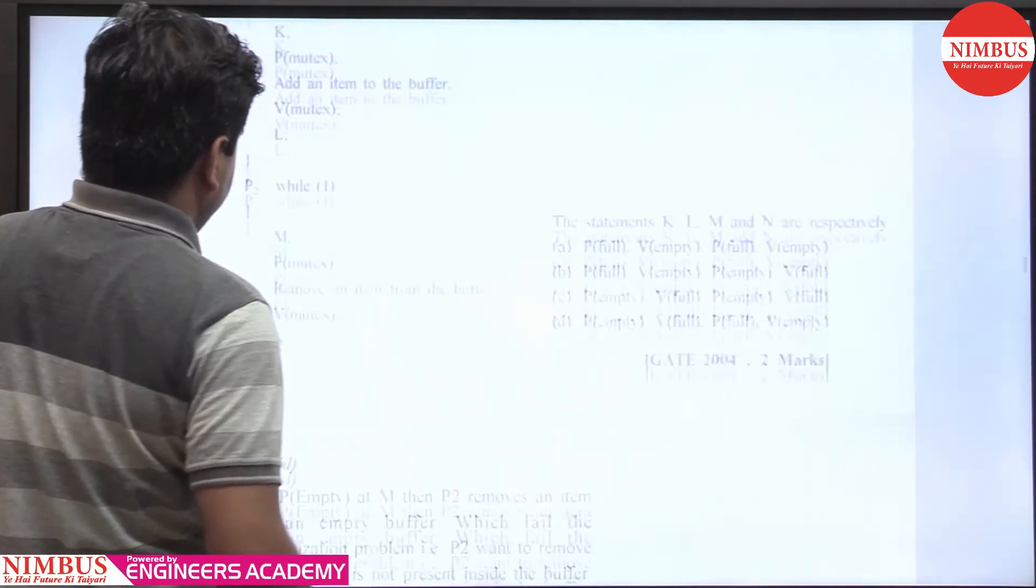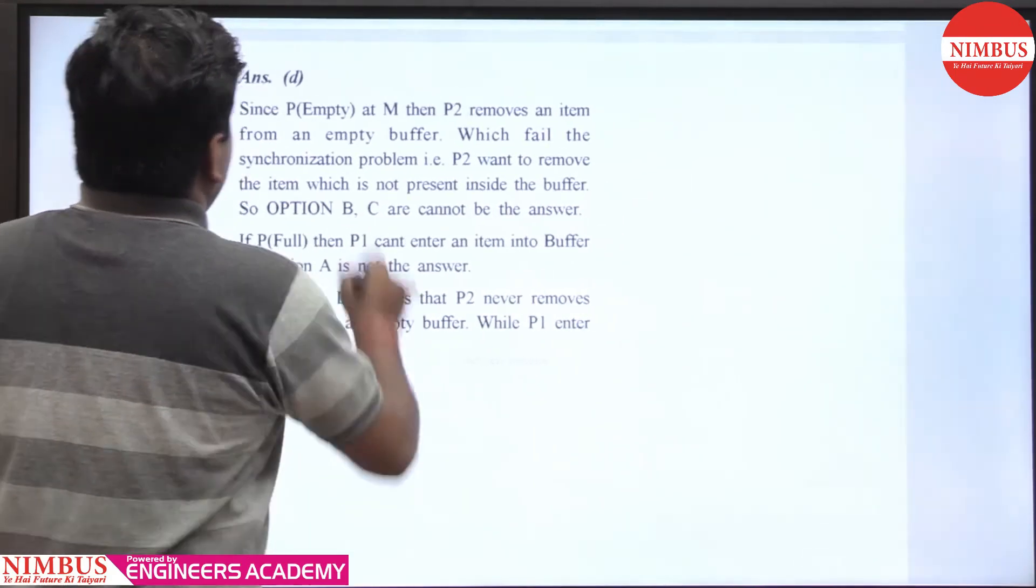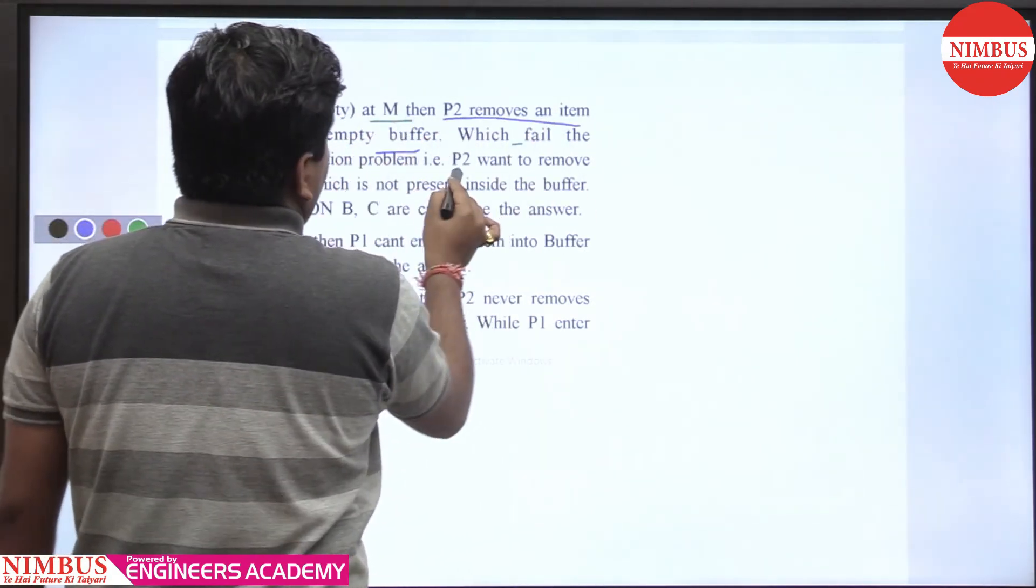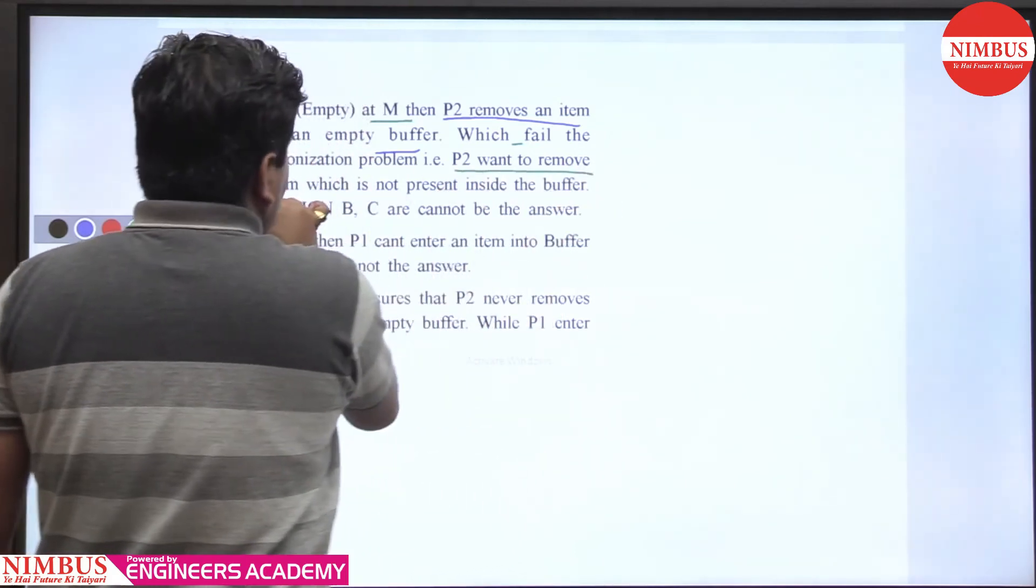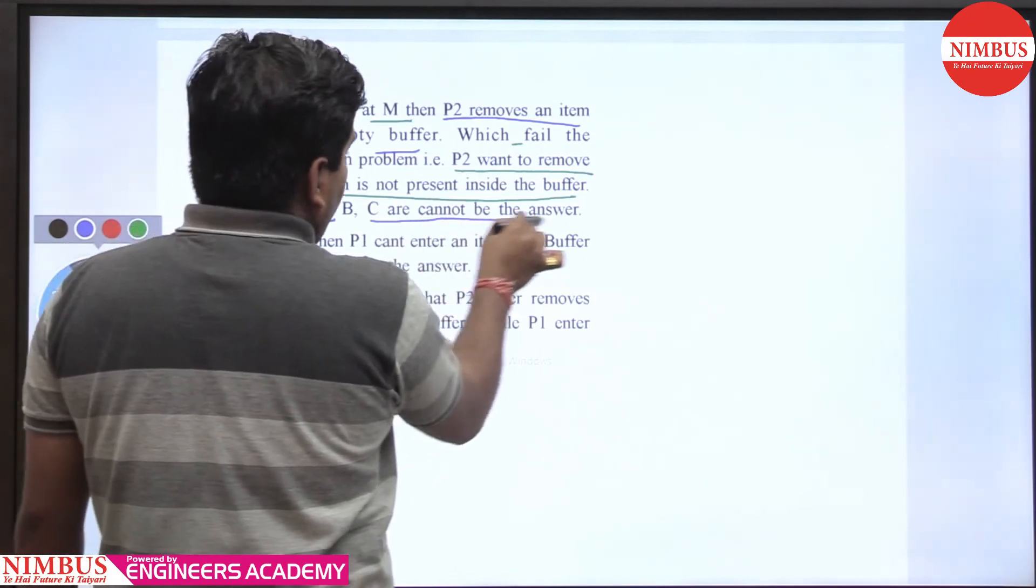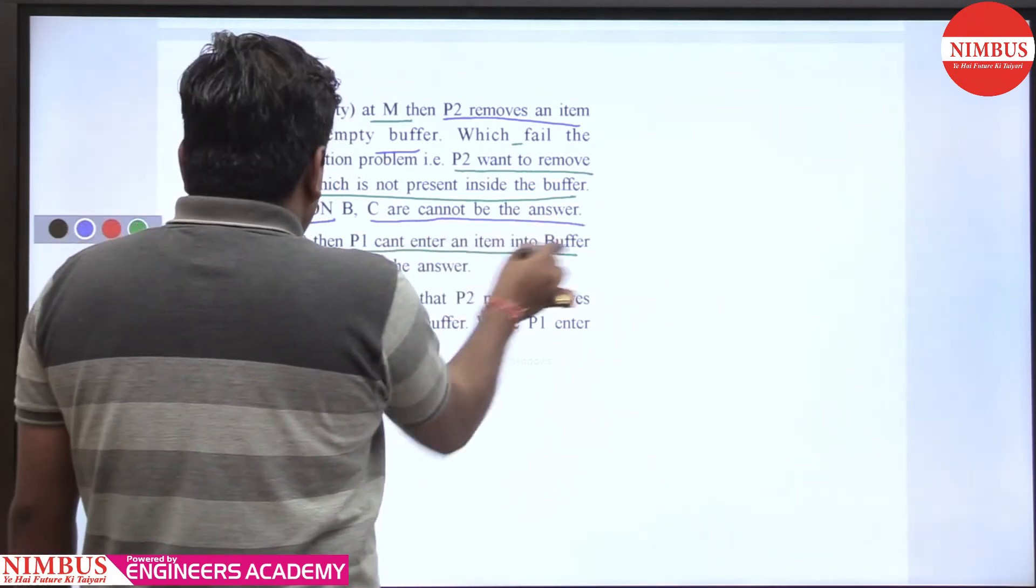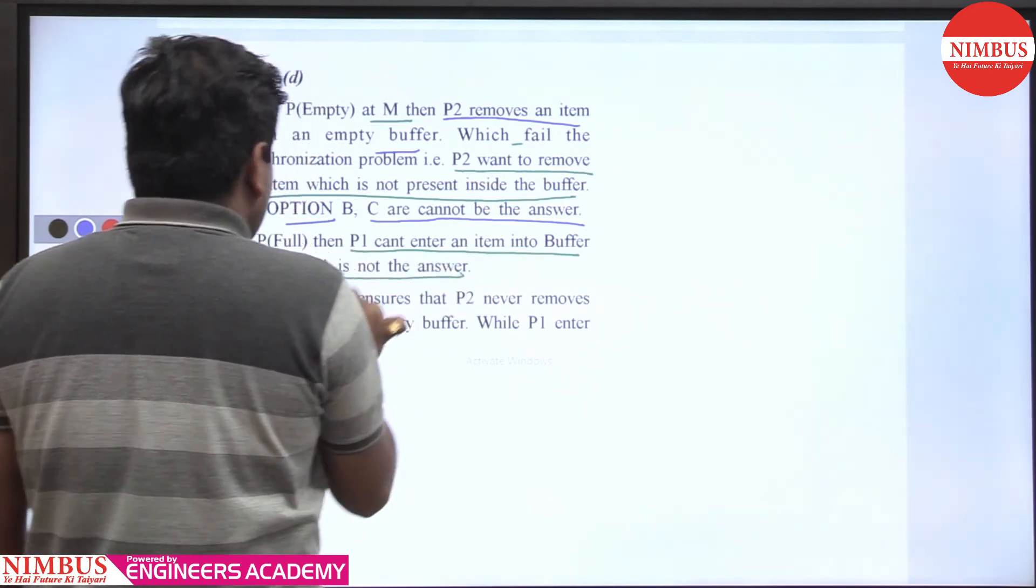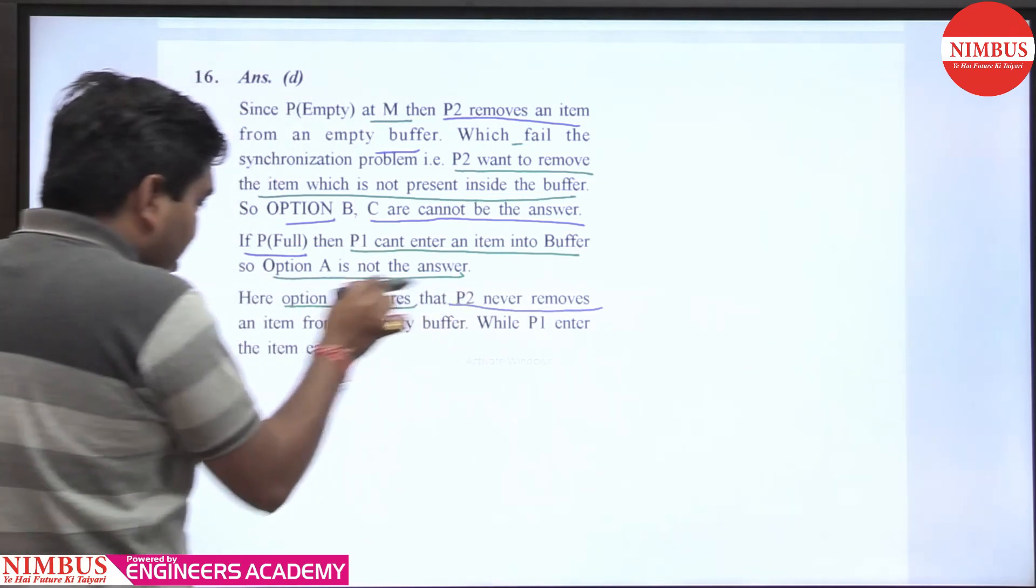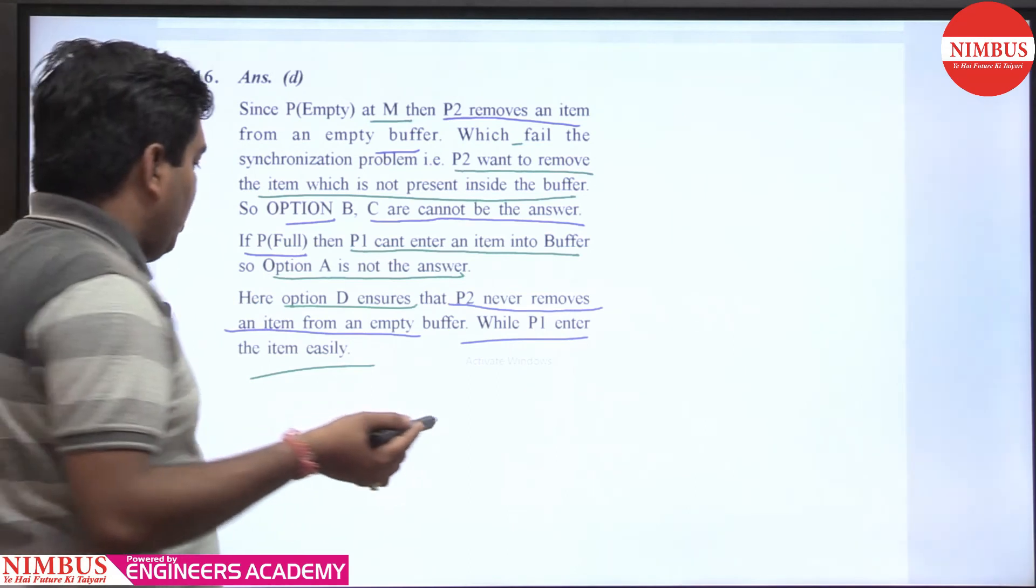You can verify: if P2 removes an item not present in the buffer, that's a synchronization problem. Option B and C cannot be the answer. If P(full) is used, P1 cannot enter the buffer, so option A is also wrong. Option D ensures P2 never removes an item from an empty buffer while P1 can enter items easily.